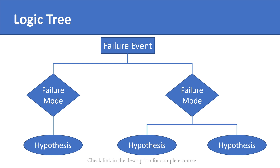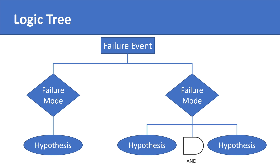Where there are multiple hypotheses, it is important to consider what could be the relation between them for the same failure mode. This is where the Boolean operator comes into play. Logic gates are used to describe the relationship between two or more hypotheses. This forms the basic structure of a logic tree.